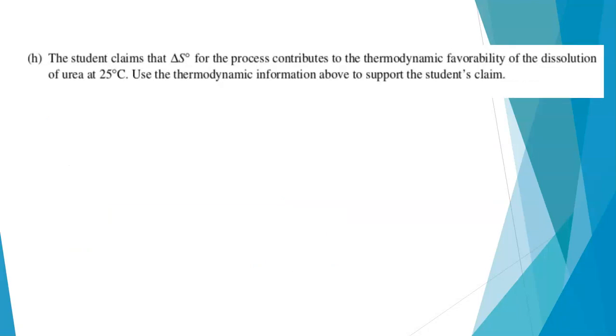And then finally, the student claims that delta S for the process contributes to the thermodynamic favorability of the dissolution of urea at this temperature. Use the information from the problem that we've gotten to support the claim. This was also scored out of one point. So thermodynamically favorable, otherwise known as being spontaneous, means that delta G is a negative value. And the definition of delta G is that delta G equals delta H minus T delta S.